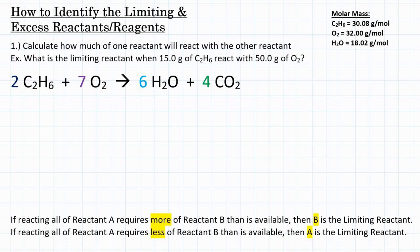In this video I am going to teach you how to identify the limiting and excess reactants or reagents for a stoichiometry problem. I'm going to teach you two different ways that you can identify the limiting and excess reactants. This first way we're going to talk about is by calculating how much one reactant will react with the other reactant, and this is probably the easiest way if you don't need to calculate how much product you'll end up with.